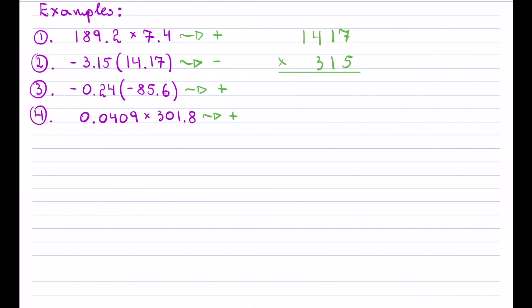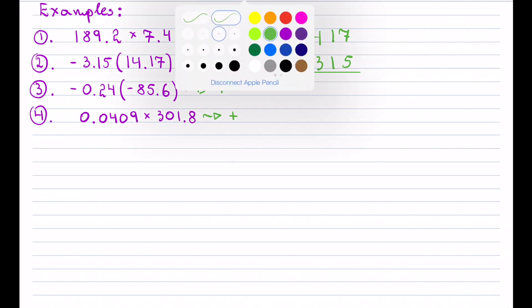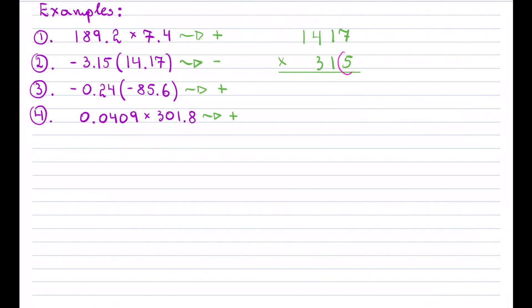Proceeding with the multiplication, start with the 5: 5 times 7 is 35, carry the 3; 5 times 1 plus the 3 is 8, nothing to carry; 5 times 4 is 20, carry the 2; 5 times 1 plus the 2 is 7. We're done with this row.